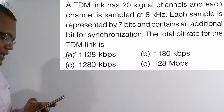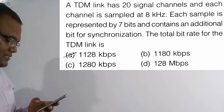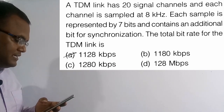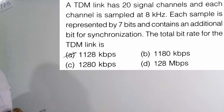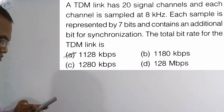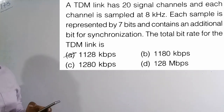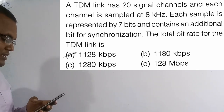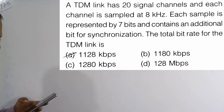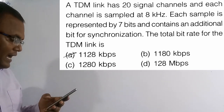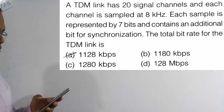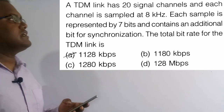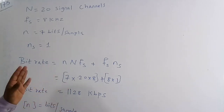Now solving question 103. A TDM link has 20 signal channels, each sampled at 8 kilohertz. Each sample is represented by 7 bits and contains one additional bit for synchronization. We need to find the total bit rate. There are 20 signal channels; each signal is sampled at 8 kHz. One extra synchronization bit is sent per frame to avoid crosstalk. Each sample is represented by 7 bits.